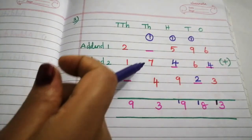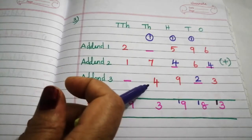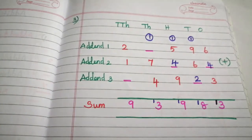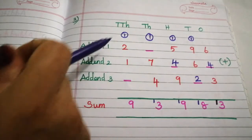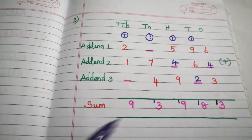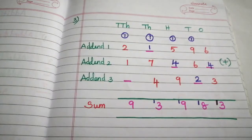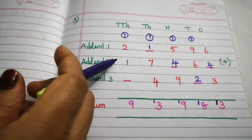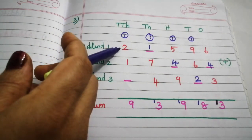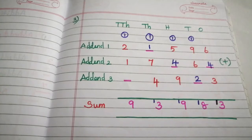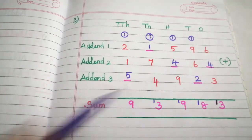For the next digit, add 7 plus 4 is 11, 11 plus 1 is 12. We can't subtract 12 from 3, so this is 13. Put the carryover forward. 13 minus 12 is 1. For the last digit, 1 plus 2 is 3, 3 plus 1 is 4, and 9 minus 4 is 5. So our missing digits are 5, 1, 4, 2, 4.